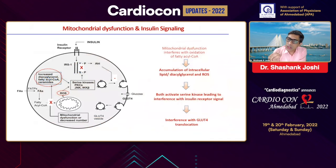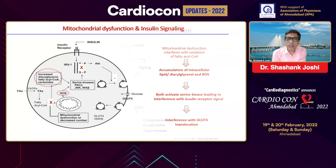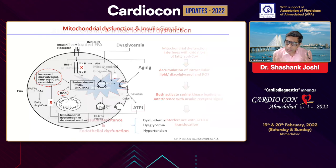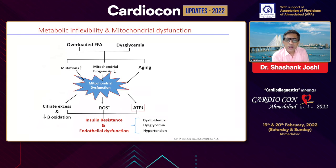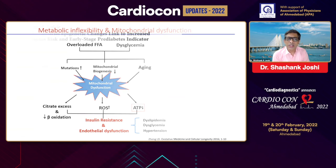When there is mitochondrial dysfunction, it interferes with oxidation of acetyl-CoA, it accumulates intracellular lipids and diacylglycerols, it activates serine kinase, it interferes with insulin receptor signaling, and GLUT4 translocation is interrupted. This metabolic inflexibility and mitochondrial dysfunction leads to impaired citrate excretion and beta-oxidation, insulin resistance and endothelial dysfunction, and ATP depletion — resulting in a trio of dysglycemia, dyslipidemia, and hypertension, which kills through coronary artery disease.